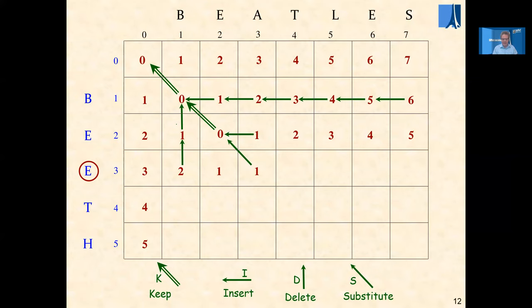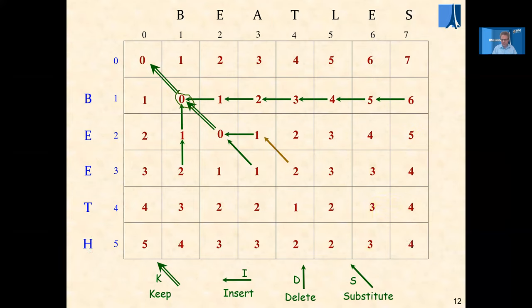So the basic rule: if the characters are the same, keep the above-left value. If they are different, take the minimum of the three neighbors — left, above, and above-left — and add one. Continuing like this to the end, we get the value four in the bottom-right entry, which is the distance between 'beeth' and 'beatle'. That's how the algorithm works.